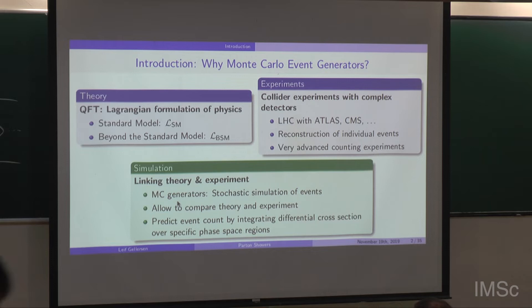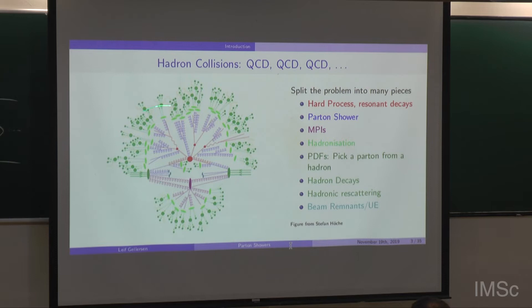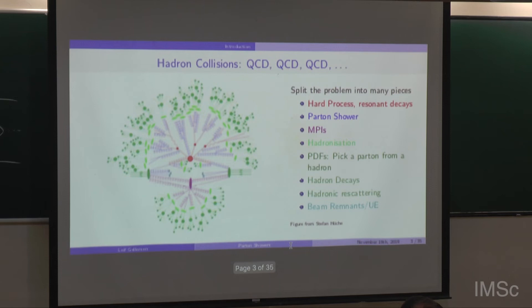They predict an event count by integrating differential cross sections over specific phase space regions. At the core of every event there's a hard scattering, depicted in red. Most talks here focus on that, but I will now talk about the parton shower — attaching additional radiation in the final state, but also in the initial state on the internal lines that connect the incoming partons to the hard process. We'll also talk about hadronization, since when partons arrive in the detector they will be color neutral and we need to model this transition.